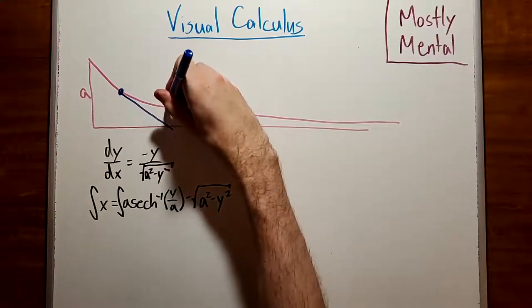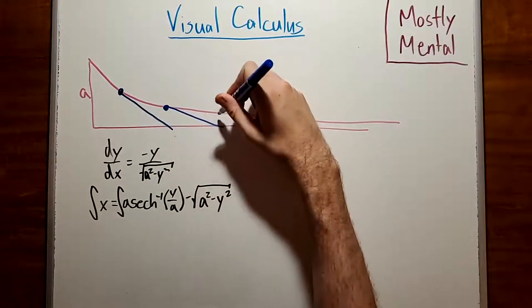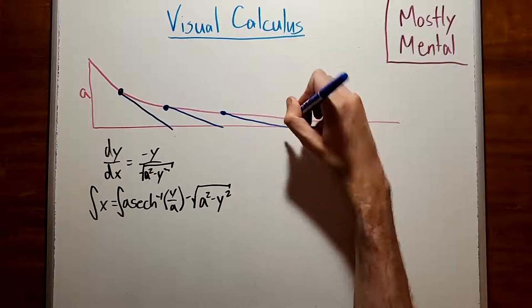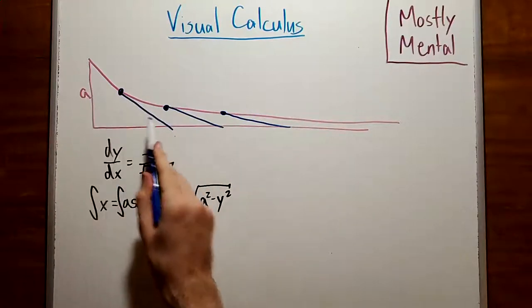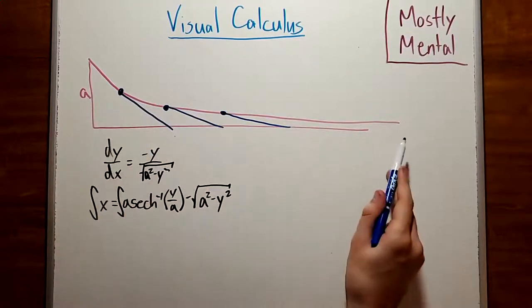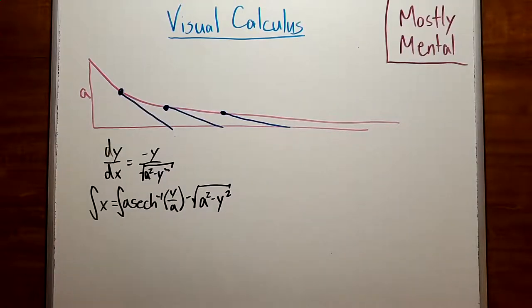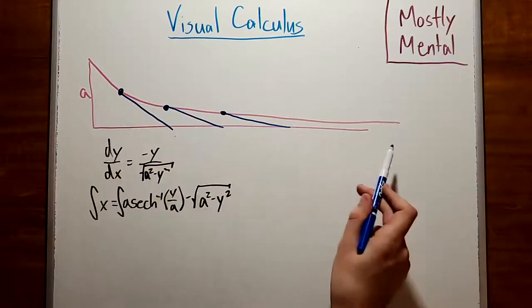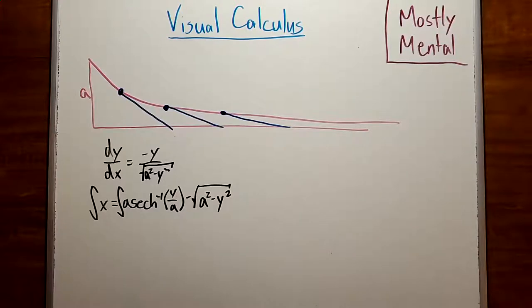And if we draw in a bunch of these segments, we can see that they sweep out the entire area underneath it. Which means that this area that we're looking for is a tangent sweep.